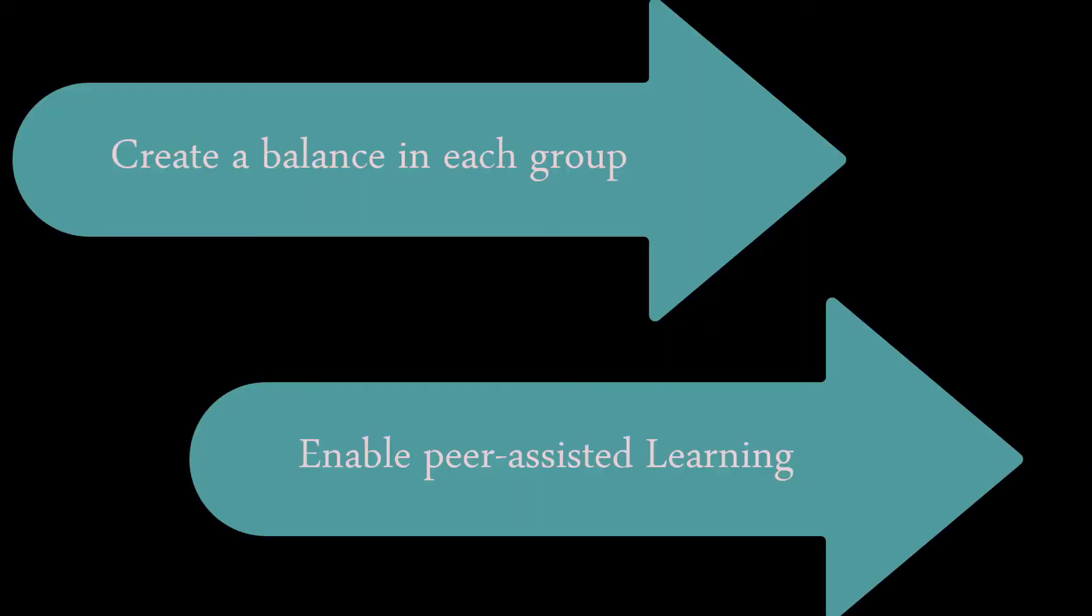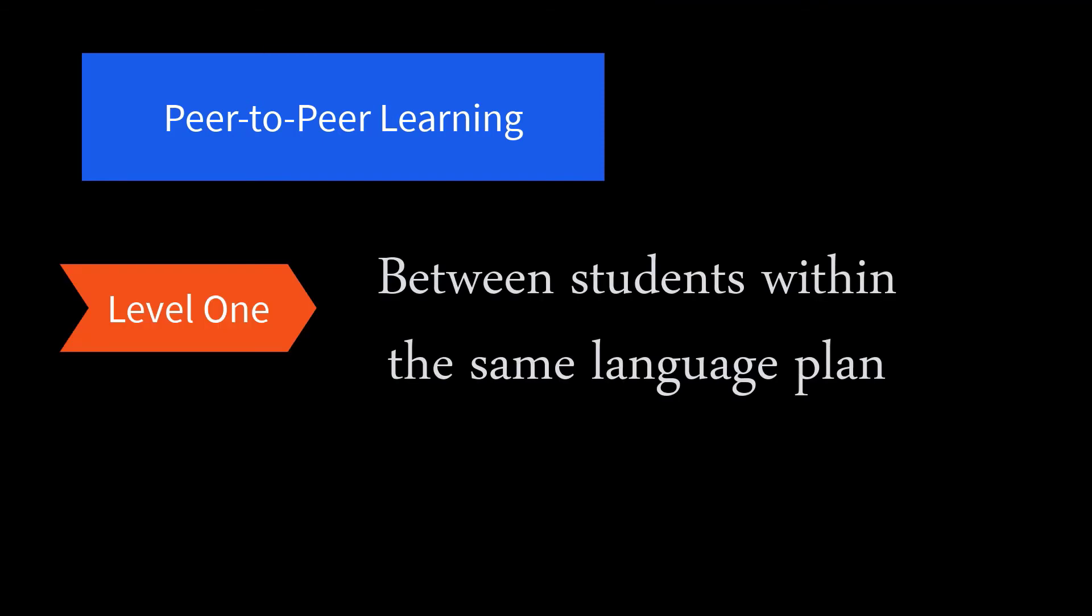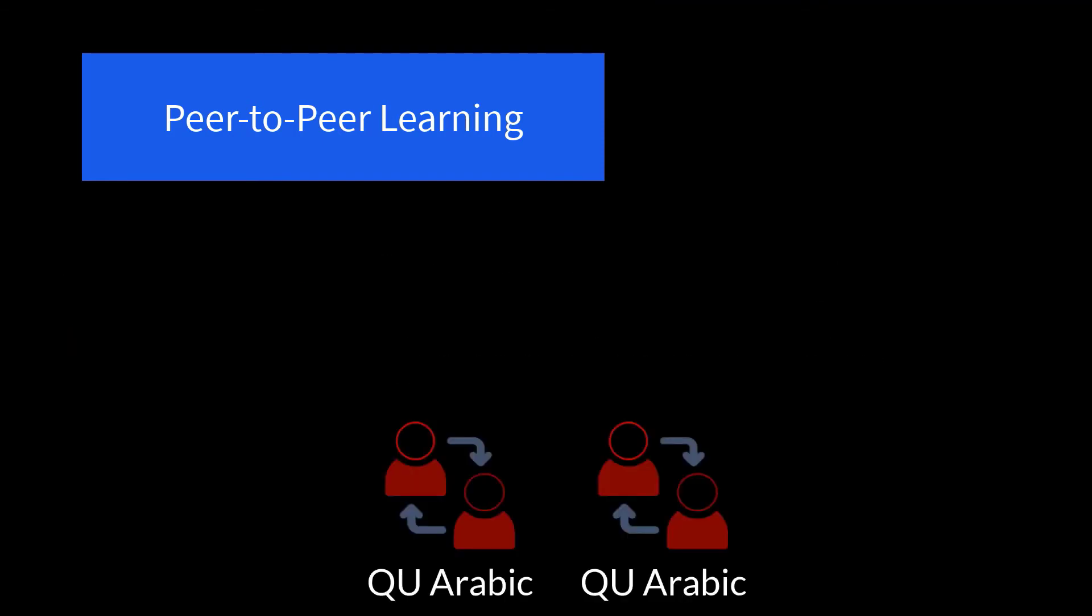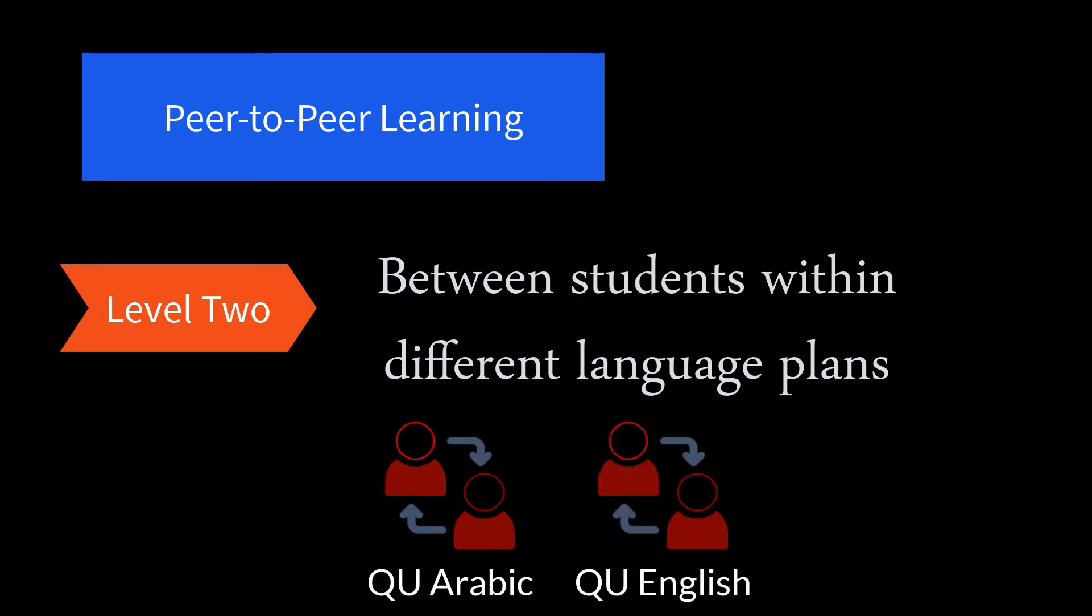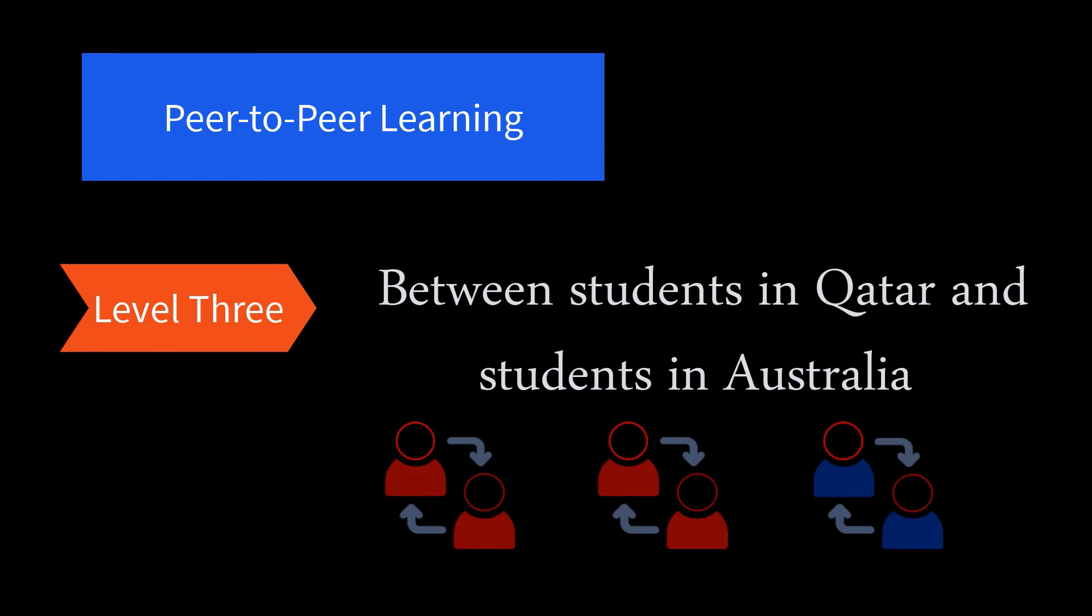Secondly, to enable and facilitate peer-assisted learning. Peer-assisted learning happened at three different levels. The first level was between students within the same language plan. The second was between students within different language plans. And then the third peer-to-peer learning happened between students in Qatar playing the junior associates and students in Australia playing the senior associates.